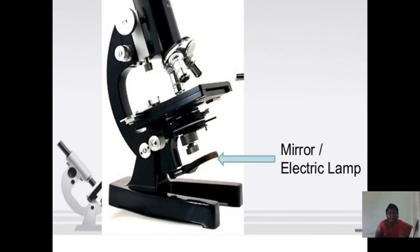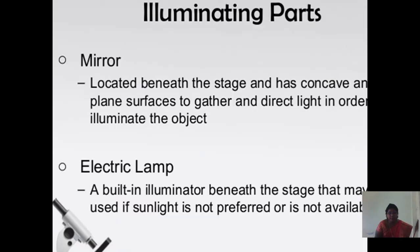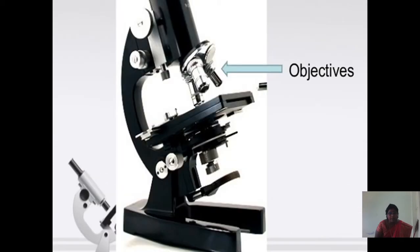Illuminating parts include the mirror and the electric lamp. The mirror is located beneath the stage and has concave and plain surfaces to gather and direct light in order to illuminate the object. The electric lamp is a built-in illuminator beneath the stage that may be used if sunlight is not available.